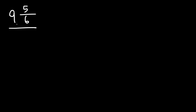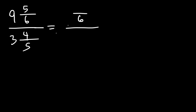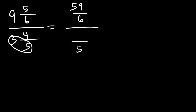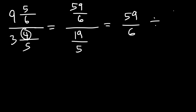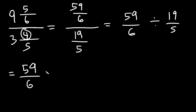Now let's move on to our second example: 9 and 5/6 divided by 3 and 4/5. Let's convert each mixed number into an improper fraction just as we did in the last problem. 9 times 6 is 54, plus 5, that's 59. Then 5 times 3 is 15, and 15 plus 4 is 19. So we have 59 over 6 divided by 19 over 5. Using keep-change-flip, we rewrite it as 59 over 6 times 5 over 19.